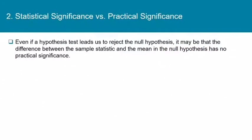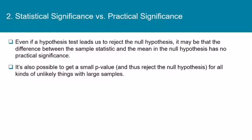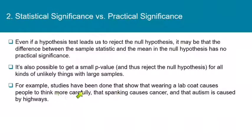You have to be careful with hypothesis testing. Even if a test leads you to reject the null hypothesis, the difference between the sample statistic and the hypothesized mean may have no practical significance. The larger your sample is, the easier it is to get a small p-value and reject the null. You can prove all kinds of unlikely things with a large enough sample — for example, studies have claimed that wearing a lab coat causes more careful thinking, that spanking causes cancer, and that autism is caused by highways. We don't believe any of these things. You cannot abandon your common sense.